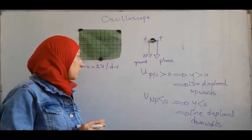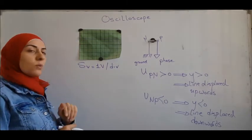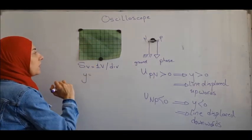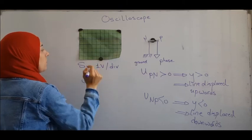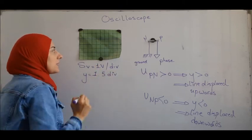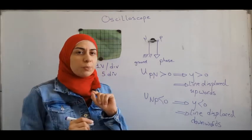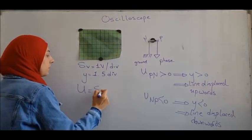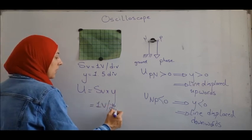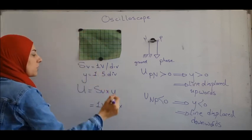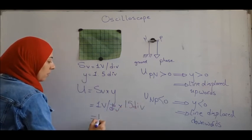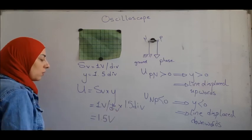To calculate the voltage, we are given that SV equals 1 volt per division. From the graph we read Y — in this case 1.5 divisions. Using the formula U equals SV times Y: U equals 1 times 1.5, so the voltage of the battery is 1.5 volts. If measuring a negative voltage, Y will be negative and U will be negative as well.